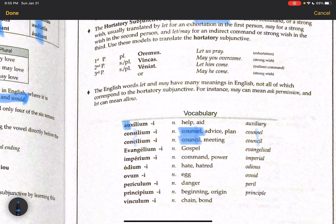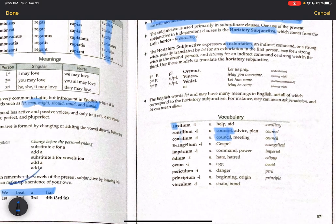All right, then we have evangelium, imperium, odium, ovum, egg, periculum, principium, and vinculum. And there's not too much else about that that I'm going to say.